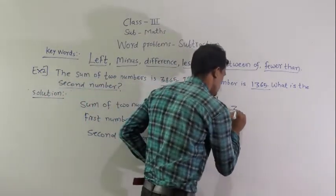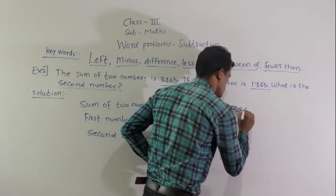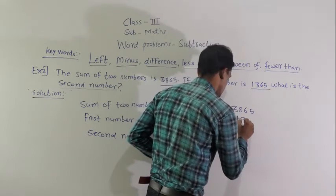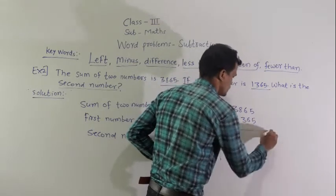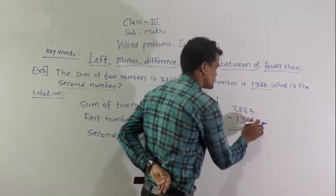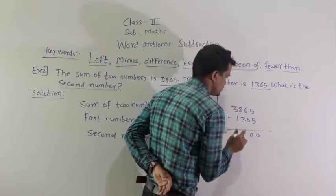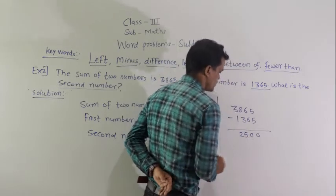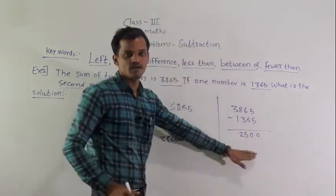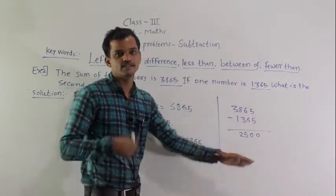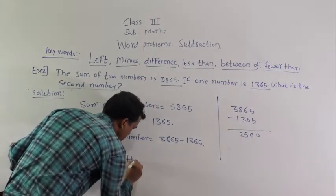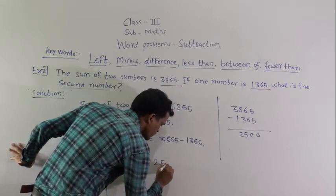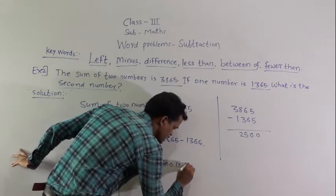Now do the subtraction: 3865 minus 1365. Subtract digit by digit — 5 minus 5 is 0, 6 minus 6 is 0, 8 minus 3 is 5, 3 minus 1 is 2. So the answer is 2500. This is the second number. Write the last statement: Hence, 2500 is the second number.